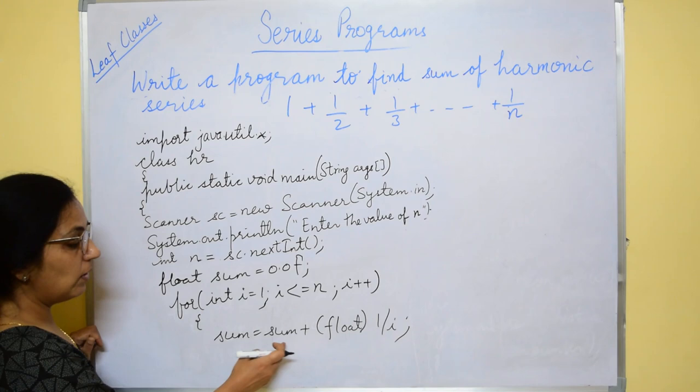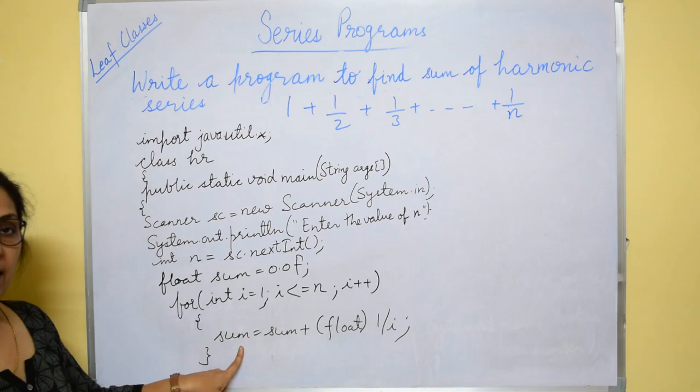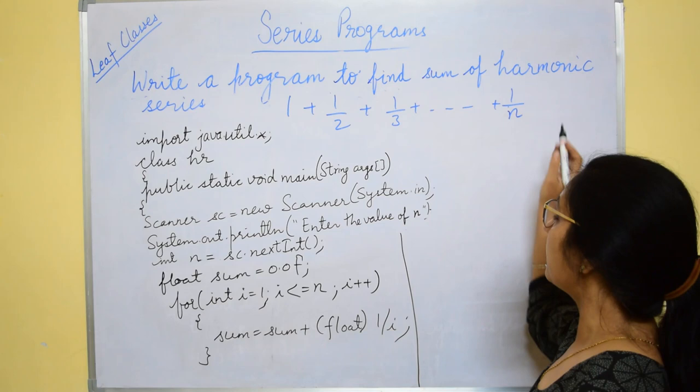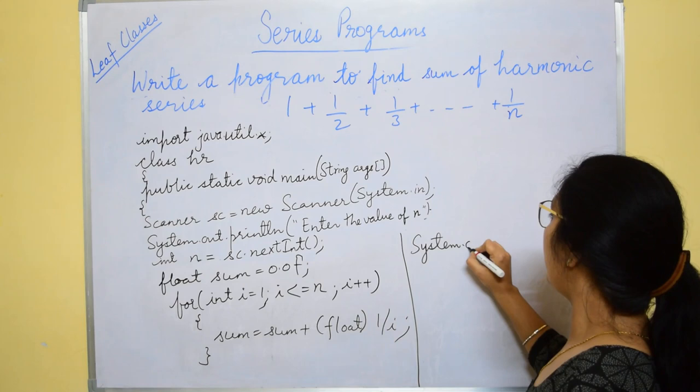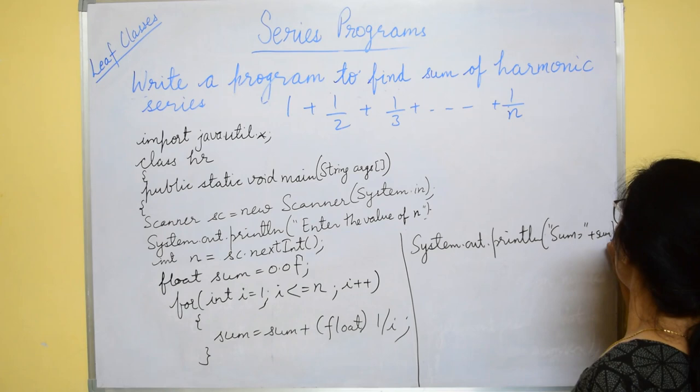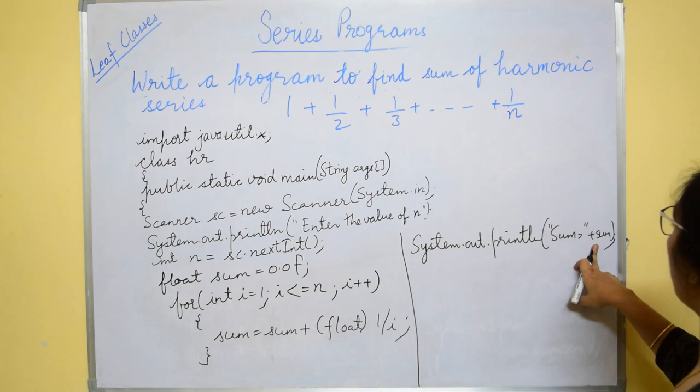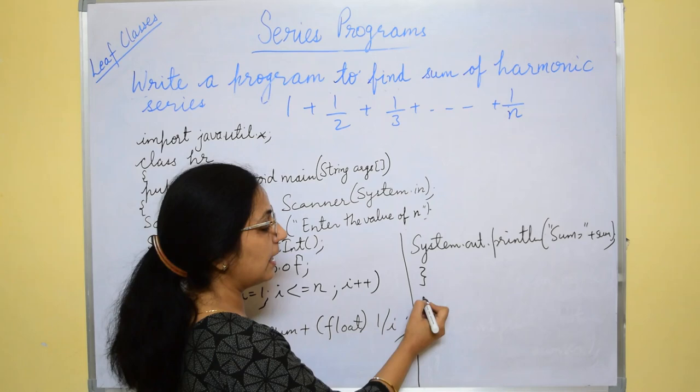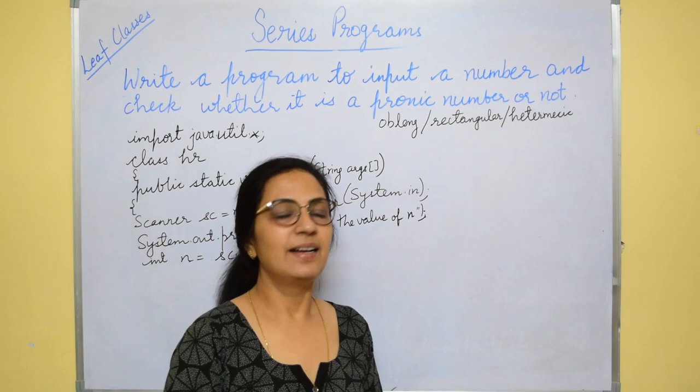This will be calculated and stored in float format and the final value will be added to sum. So after completion of this loop in sum variable will have the value of this series from first to n terms. So after that you will print using print statement and println sum is equals to plus sum. Like this different series are there.